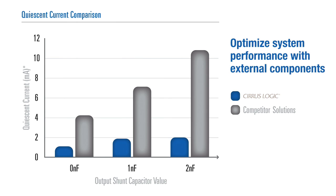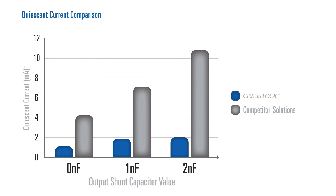The hybrid Class-D architecture also allows designers to optimize their system performance with external components if needed, such as here with an external shunt capacitor, without consuming excessive amounts of power.